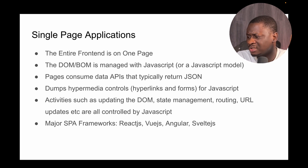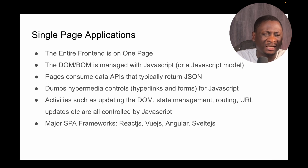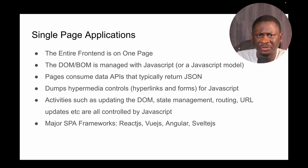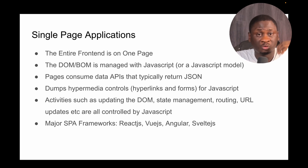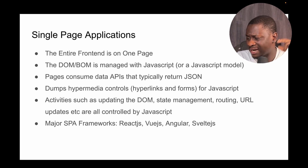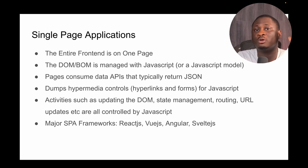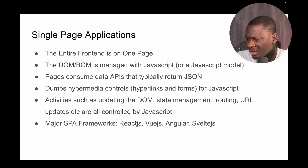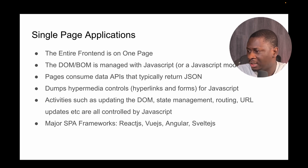Single page applications kind of dump the hypermedia controls — hyperlinks and forms were just page elements; they didn't use the hypermedia architecture they were meant to use. Everything was controlled by JavaScript: moving from one page to another, submitting forms, validation — all done by JavaScript. Activities like updating the DOM, state management, routing, and changing the URL in the browser — all done by JavaScript. HTML and hypermedia kind of took a backseat. Major frameworks that achieved this include React, Vue.js, Svelte, and Angular.